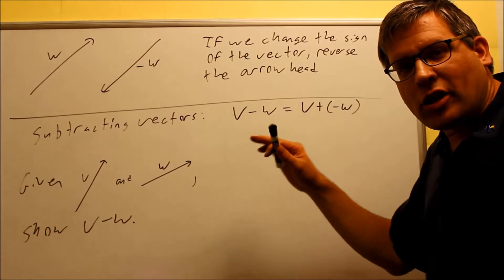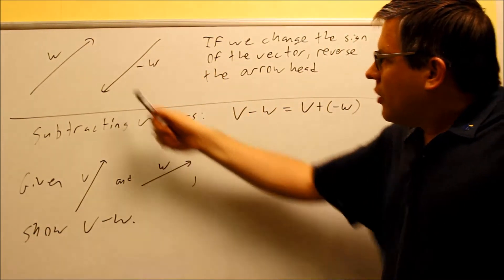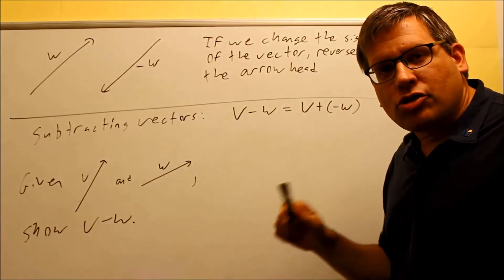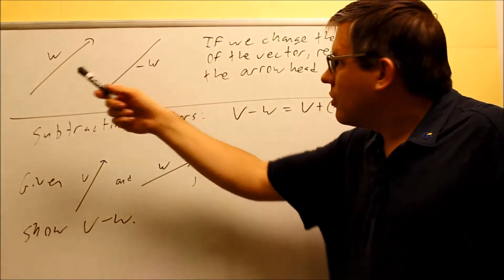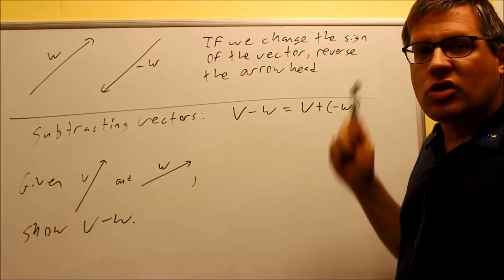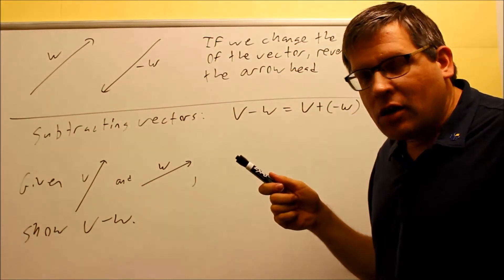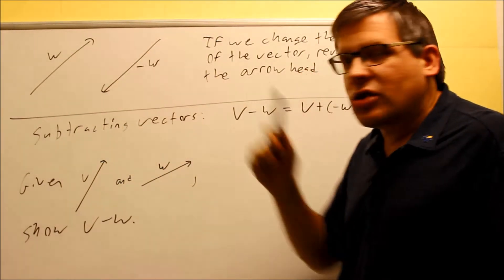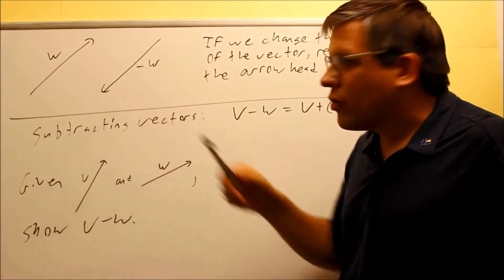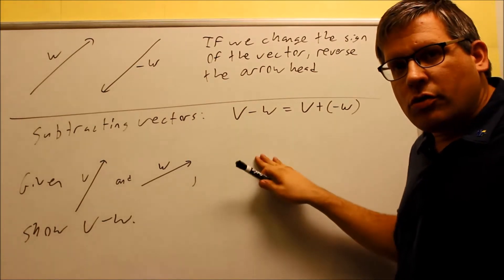Next we're going to talk about subtracting vectors. Now before we get to that, we need to understand this concept here. If we have an original vector that goes up and to the right and we want to change the sign of that vector, in other words make it positive to negative or negative to positive, then the rule is we've got to reverse the arrowhead. We keep it at exactly the same slope or the same angle, we're not going to change that. All we're doing is simply reversing the arrowhead. So if we have W's going up and you want to make it negative W, just reverse the arrowhead down and it goes that way.